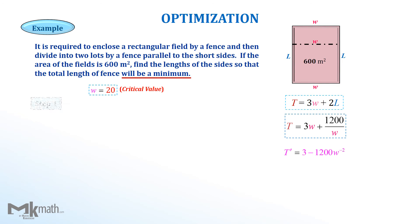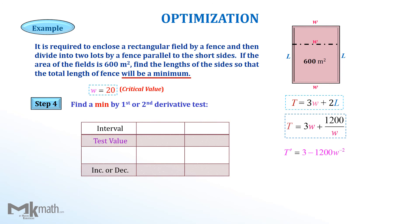Step 4, as we found the possible minimum value W equal to 20 meter, we need to prove if it is indeed the minimum value by either first or second derivative test. I am showing the first derivative test here. Place the critical value on the line and make two intervals using it. Then select the test value for each interval. I chose 1 for the first interval and 30 for the second interval.